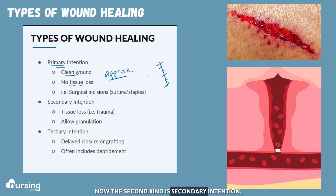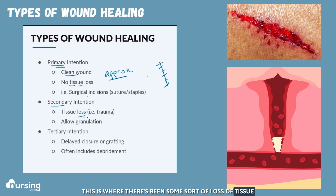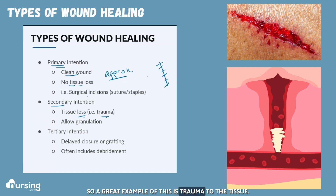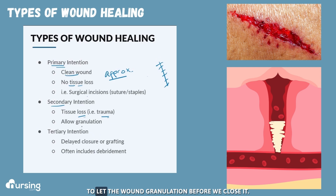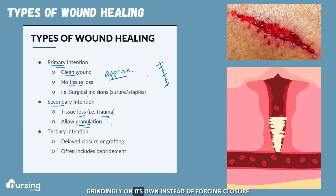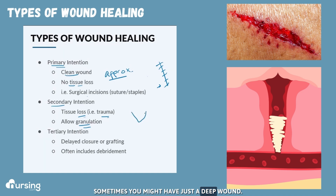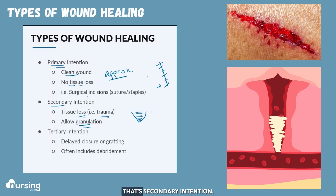The second kind is secondary intention. This is where there's been some sort of loss of tissue or it's a jagged wound. A great example of this is trauma to the tissue. The goal with secondary intention is to let the wound granulate before we close it. Sometimes we'll just let it completely granulate on its own instead of forcing closure like we do with primary intention. Sometimes you might have just a deep wound — we let it granulate up and grow in itself. That's secondary intention.